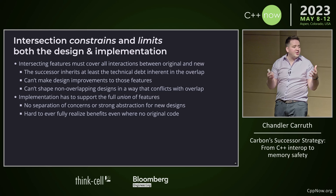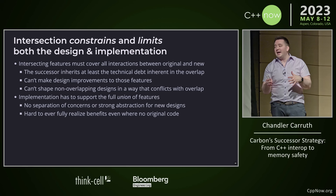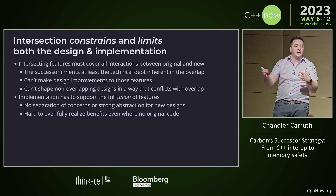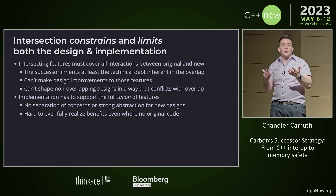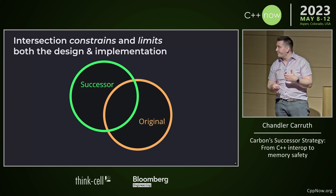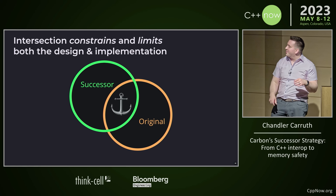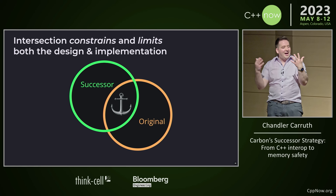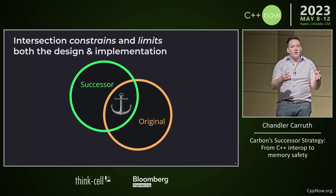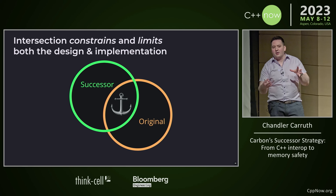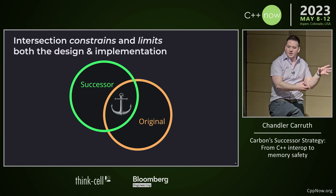Whatever implementation strategy you end up with, it has to support the union, and you're going to have a very difficult time having separation of concerns, reducing technical debt, or making other improvements to your implementation. The way I kind of visualize this — which is not entirely charitable — is that when you have this intersection approach, there's kind of an anchor. You're anchoring your successor in that original thing. And it's really hard to escape that gravity well.